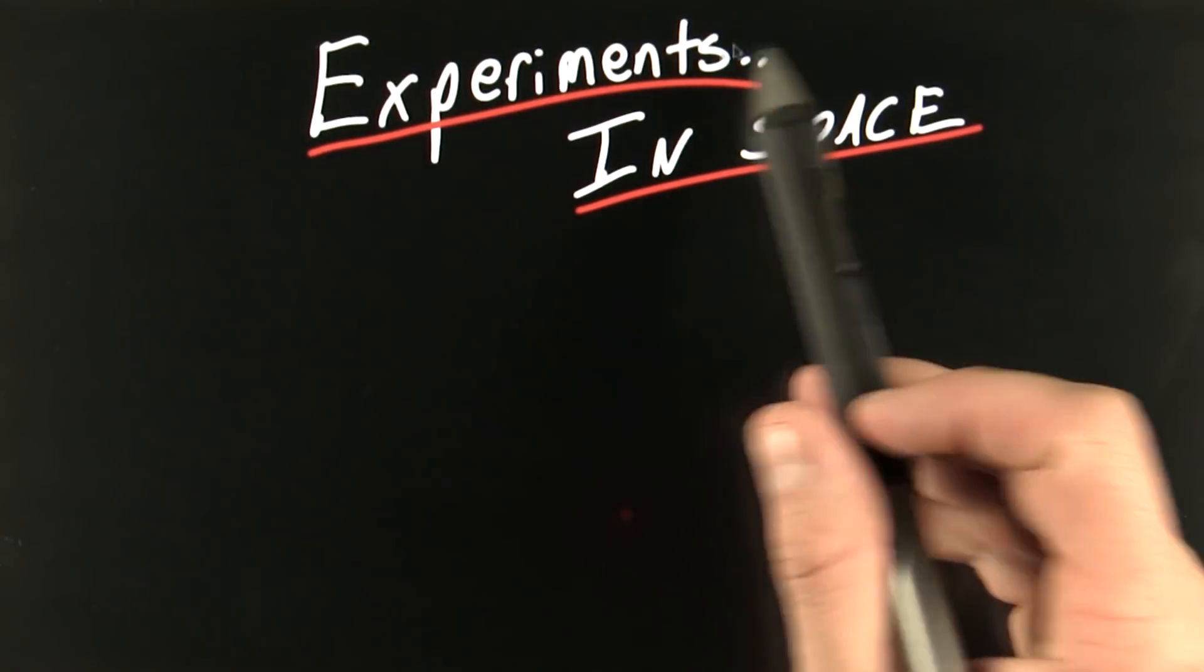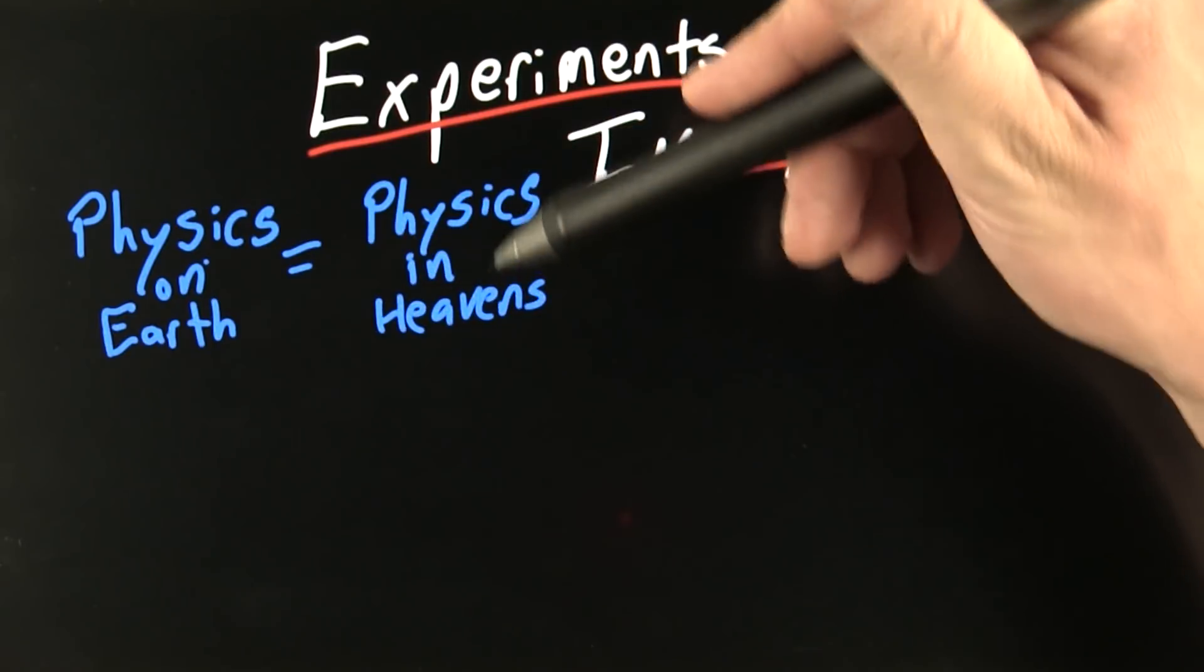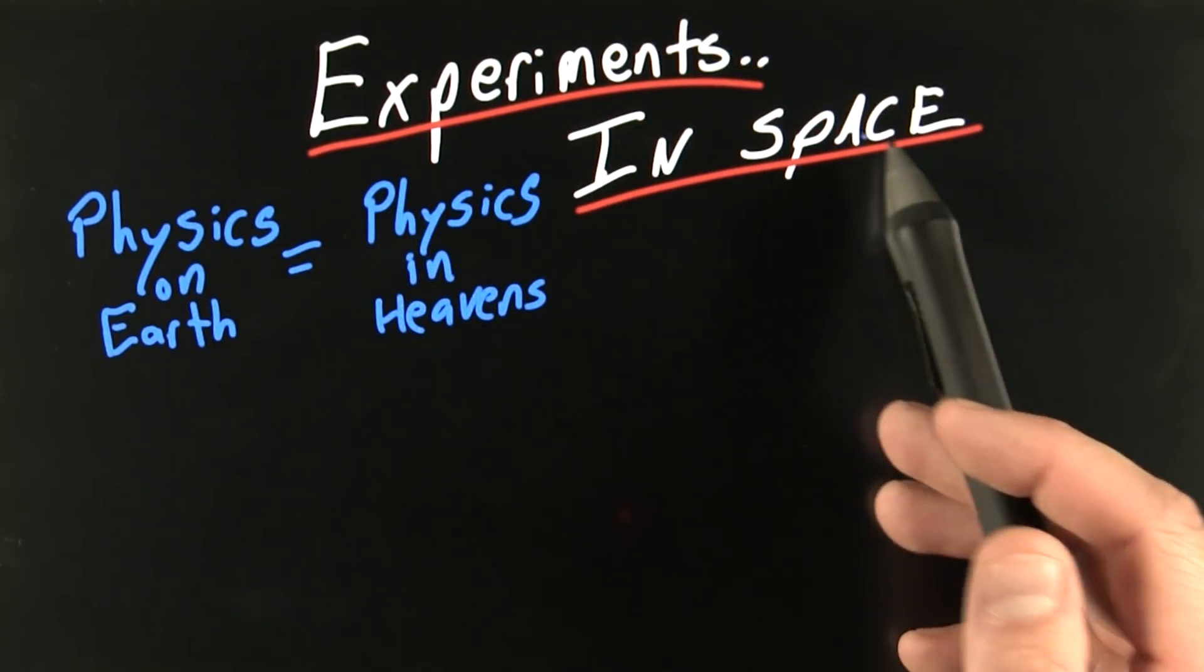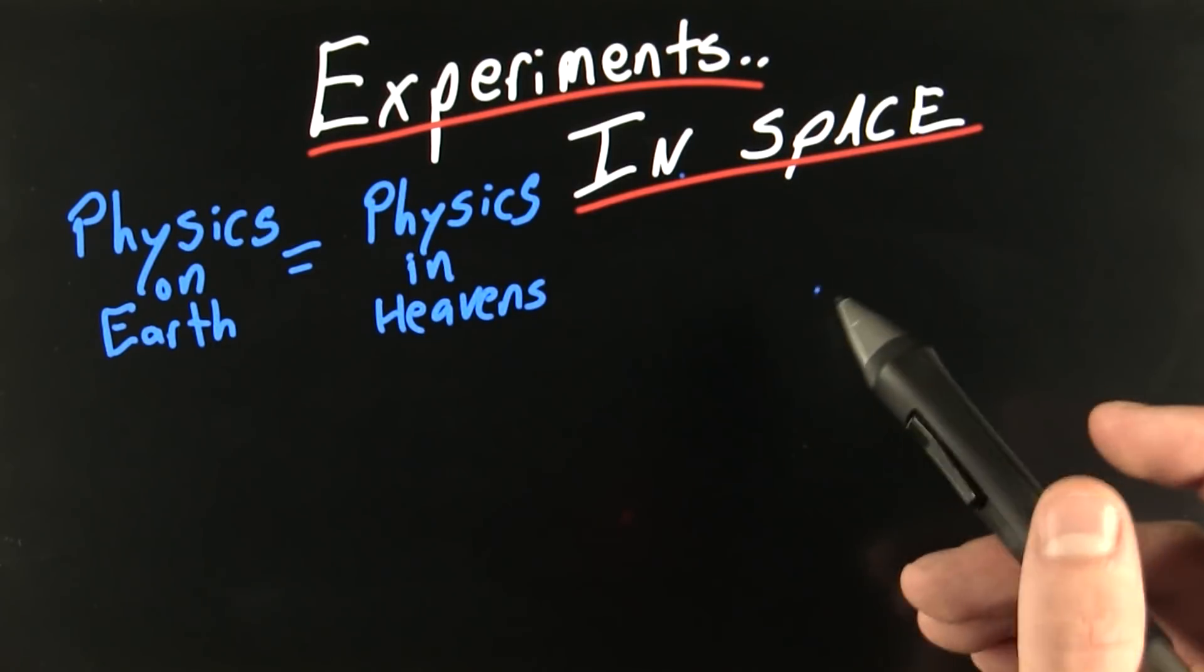To examine motionlessness, let's do an experiment in space. Since we know that the laws of physics on Earth are the same as those in the heavens, any experiment we can contrive that occurs in space, well, it should teach us about something that could also occur on the Earth.